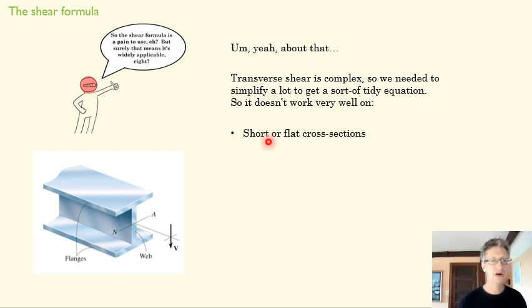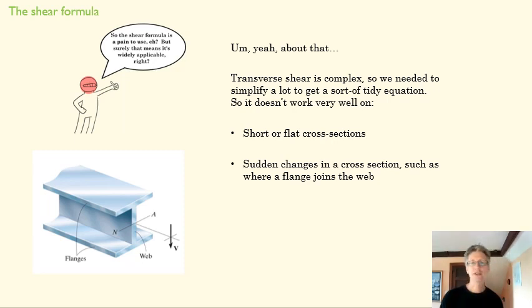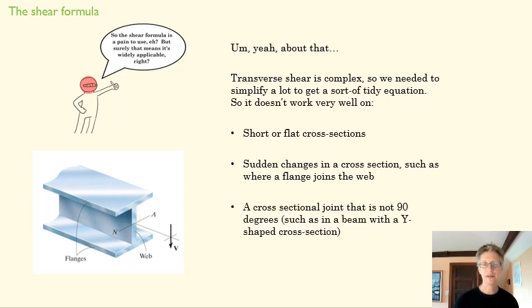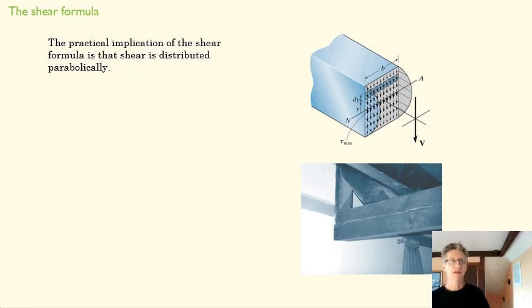So when does this work? Well, if we have a short or flat cross-section, in other words if the distance in this direction is not very high, then this shear formula doesn't work as well. If we have sudden changes in a cross-section, such as where a flange, this flange up here joins a web, like right here, this wouldn't be very accurate. And if we have a cross-sectional joint that's not 90 degrees, like a Y-shaped cross-section, here we have a nice T-shape with two 90-degree angles, this would be even less dependable if we had a Y-shaped cross-section. And there are ways to adjust for these, we're not going to dig into those in this class, but you would guess they're going to come with more complications.